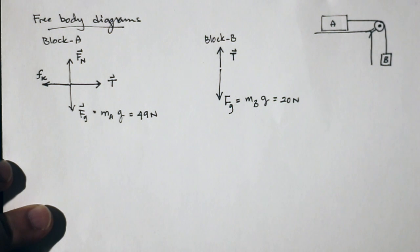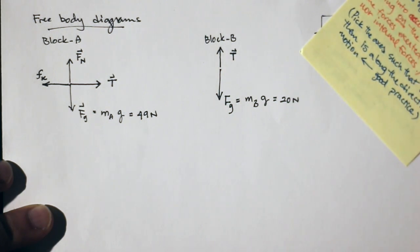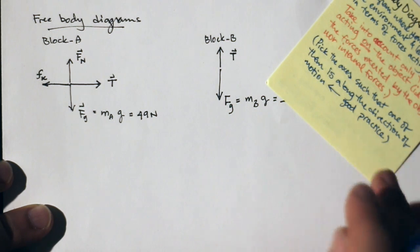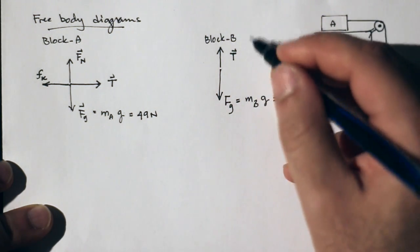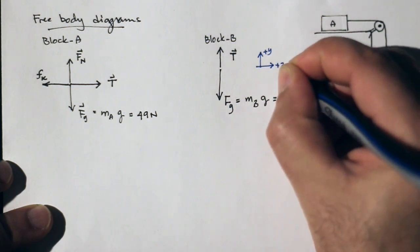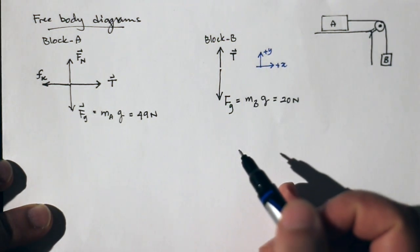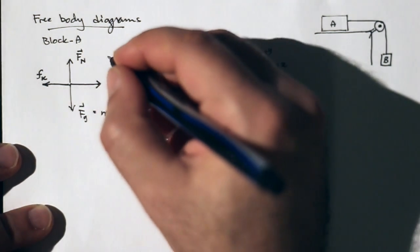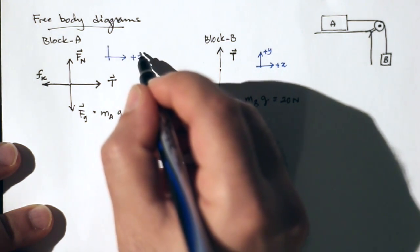Part B asks about the magnitude and direction of the acceleration of box B. To analyze the acceleration, I need to pick a coordinate system. A useful choice is to pick axes such that one of them is along the direction of motion. For block B, I'll pick up as positive Y and to the right as positive X. For block A, I can make a different choice since these are analysis choices and don't need to be consistent between A and B. In this case it's useful to pick the same orientation, since box A is going to be moving to the right.